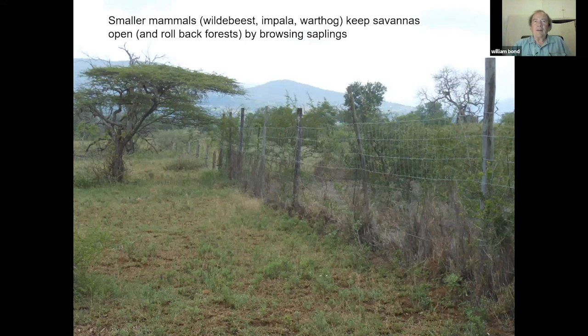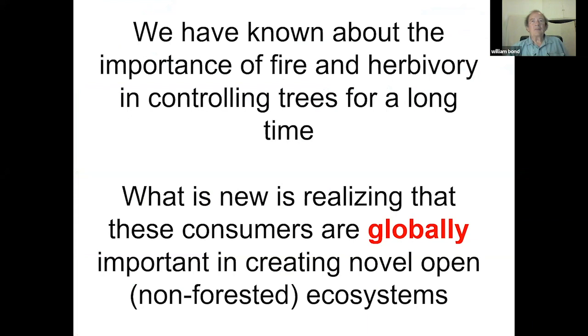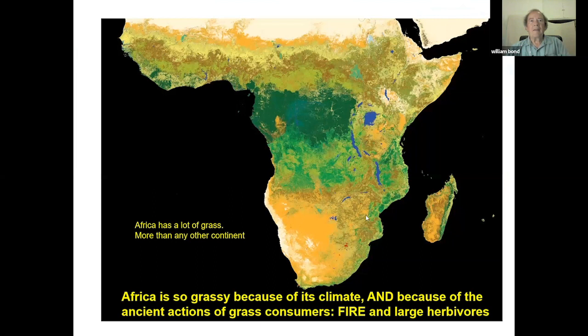This is not only true in Africa but all over the world. What is new is recognizing that fire and mammal herbivores are globally important in creating these open, non-forested, grassy ecosystems. Africa's vast grassiness is due to climate and the ancient actions of fire and large herbivores. If we could eliminate all herbivores and stop fire, Africa would have a great deal more forest.